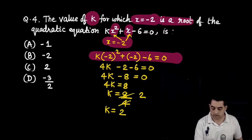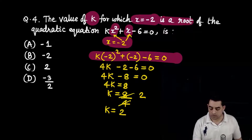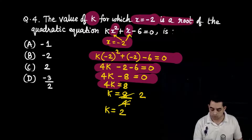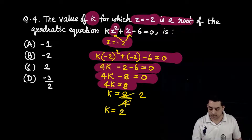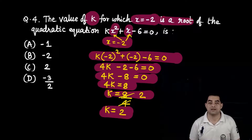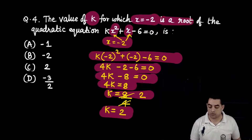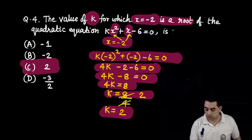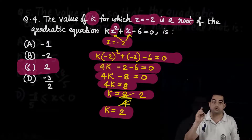Substituting x = -2: k(-2)² + (-2) - 6 = 0 → 4k - 2 - 6 = 0 → 4k - 8 = 0 → 4k = 8. Dividing by 4, k = 2. The correct answer is option C: k = 2.